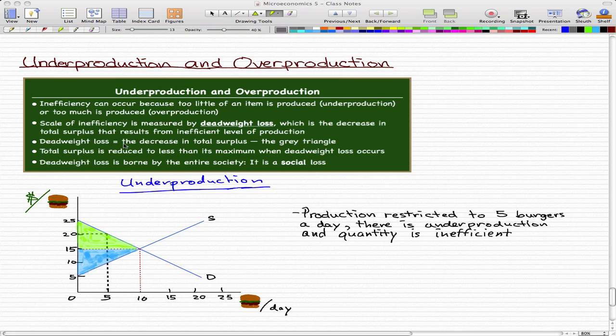I think it's finally a good time to go through underproduction and overproduction with you guys. These two concepts are really simple. Let's just go through these notes I have here and we'll get more into it. Inefficiency can occur because too little of an item is produced, and that is called underproduction, or too much is produced, that is called overproduction.